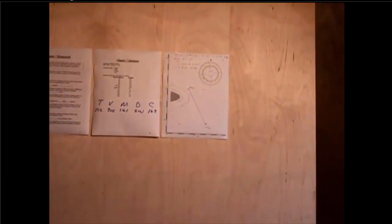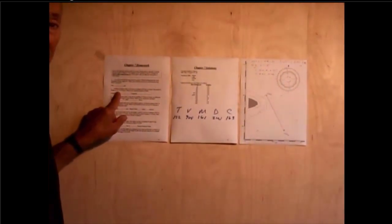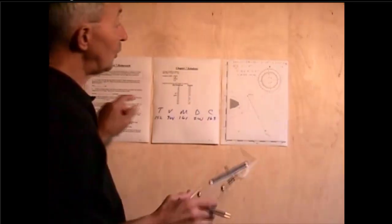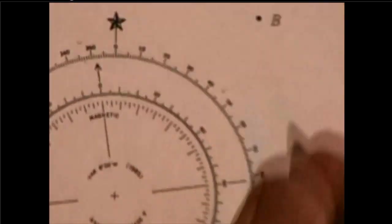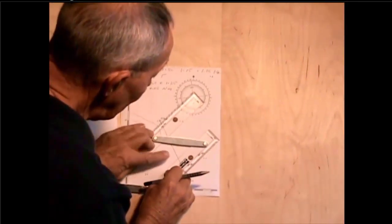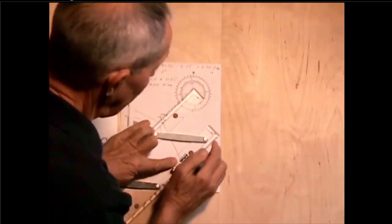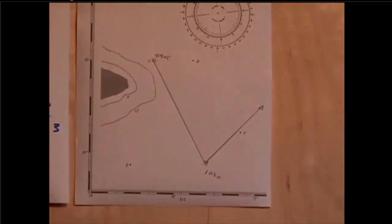But now we're going to look at the effects of current on that DR. The problem says the current is setting at 45 degrees true. So let's first draw in the direction of the current. Coming to the compass rose, here's 30, 40, 50. Here's 45. I'm going to set my parallel rules at 45 and walk them down to my DR point. From the DR point, draw in the set line. The current is setting in this direction, a set of 45 degrees.